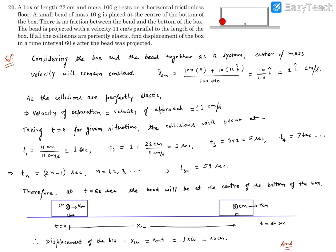So after the first collision, a new collision takes place every 2 seconds. The second collision is at t = 3 seconds, then at 5 seconds, then 7 seconds, and so on. We can generalize: the nth collision takes place at t = (2n − 1) seconds, where n = 1, 2, 3, 4... Substituting n = 1 gives 1 second, n = 2 gives 3 seconds, and so on. We need the displacement over 60 seconds.